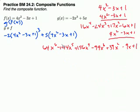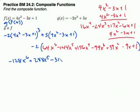Now all of that is multiplied by negative 2. So I'm going to have to go ahead and just now distribute in the negative 2. And I get negative 128x to the 6th plus 288x to the 5th minus 312x to the 4th plus 198x to the 3rd.